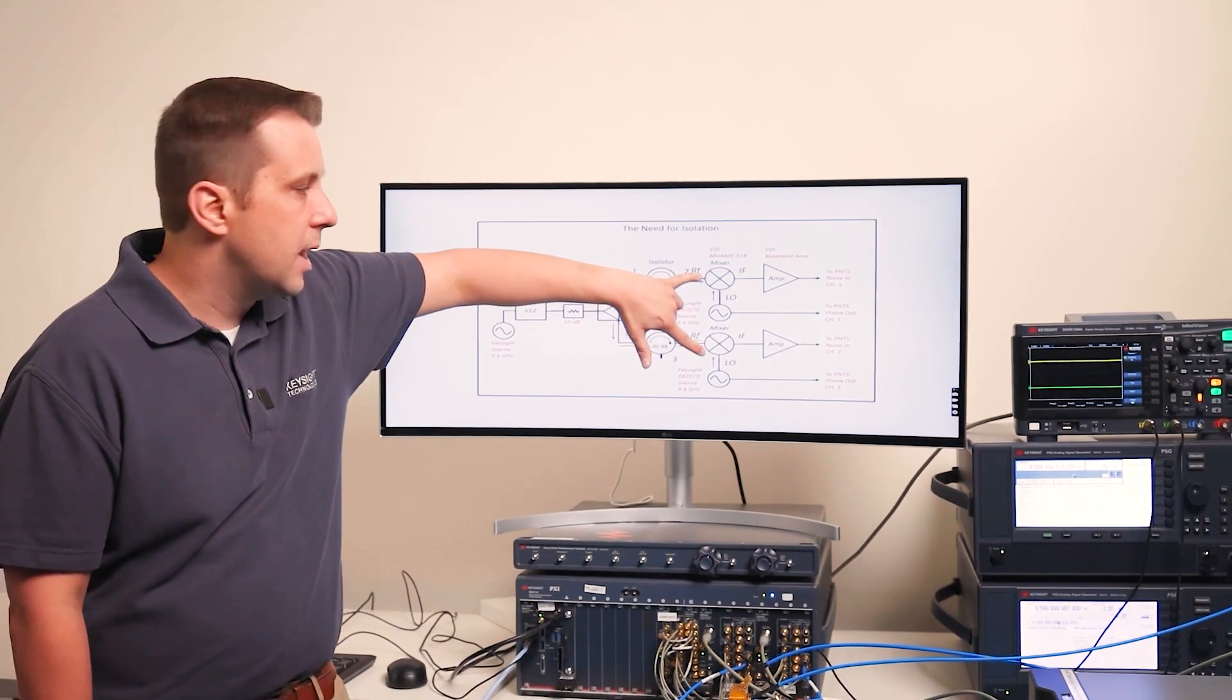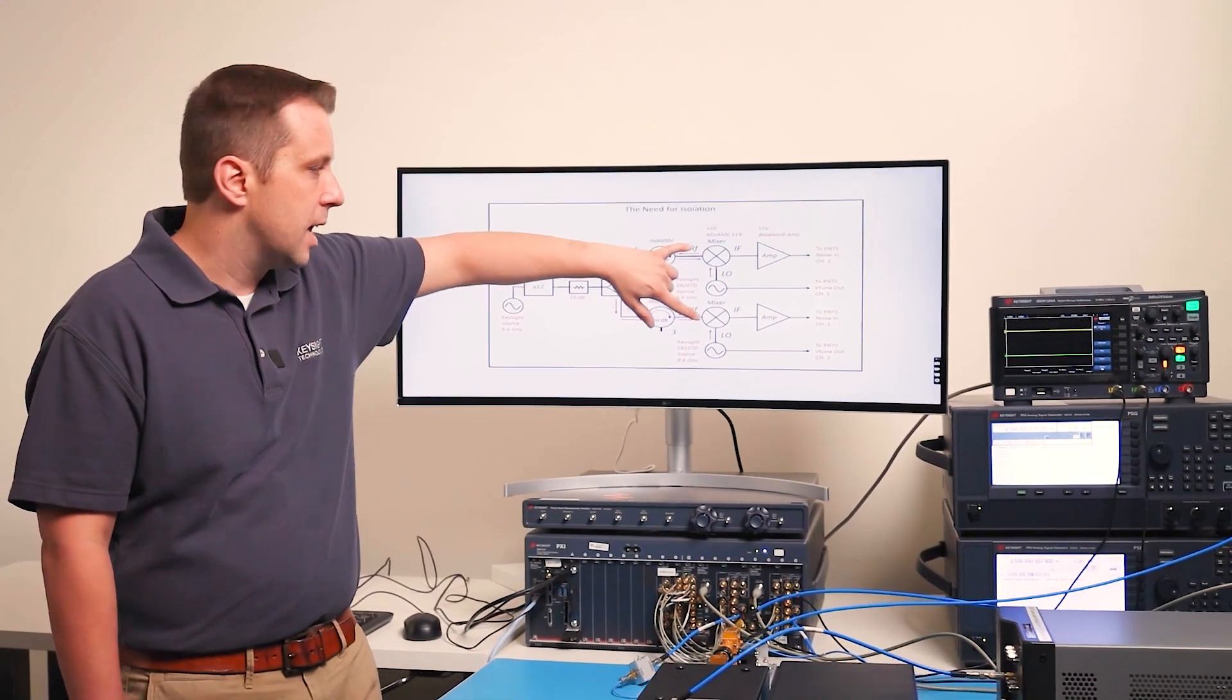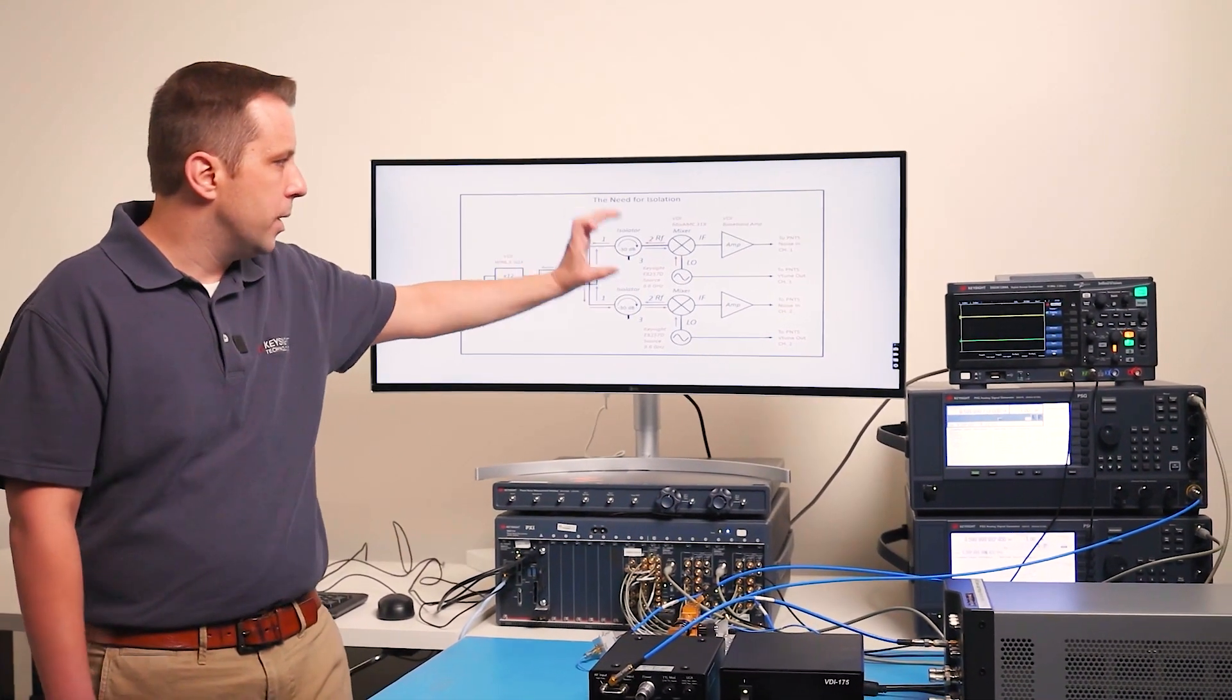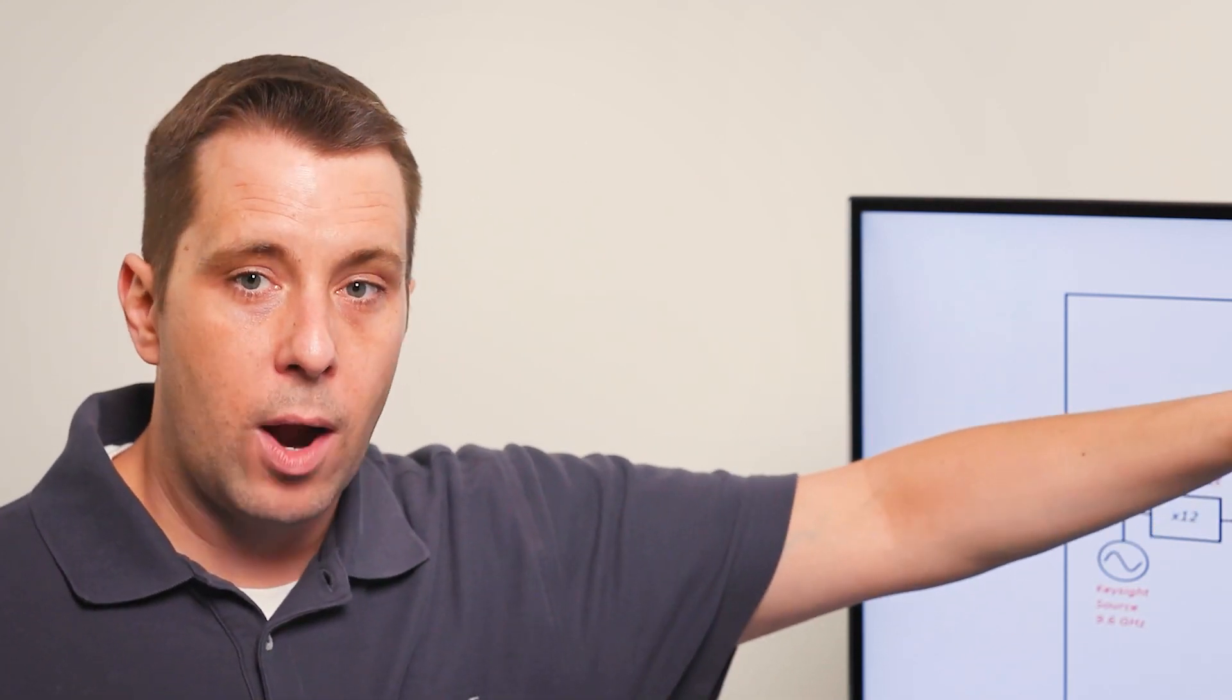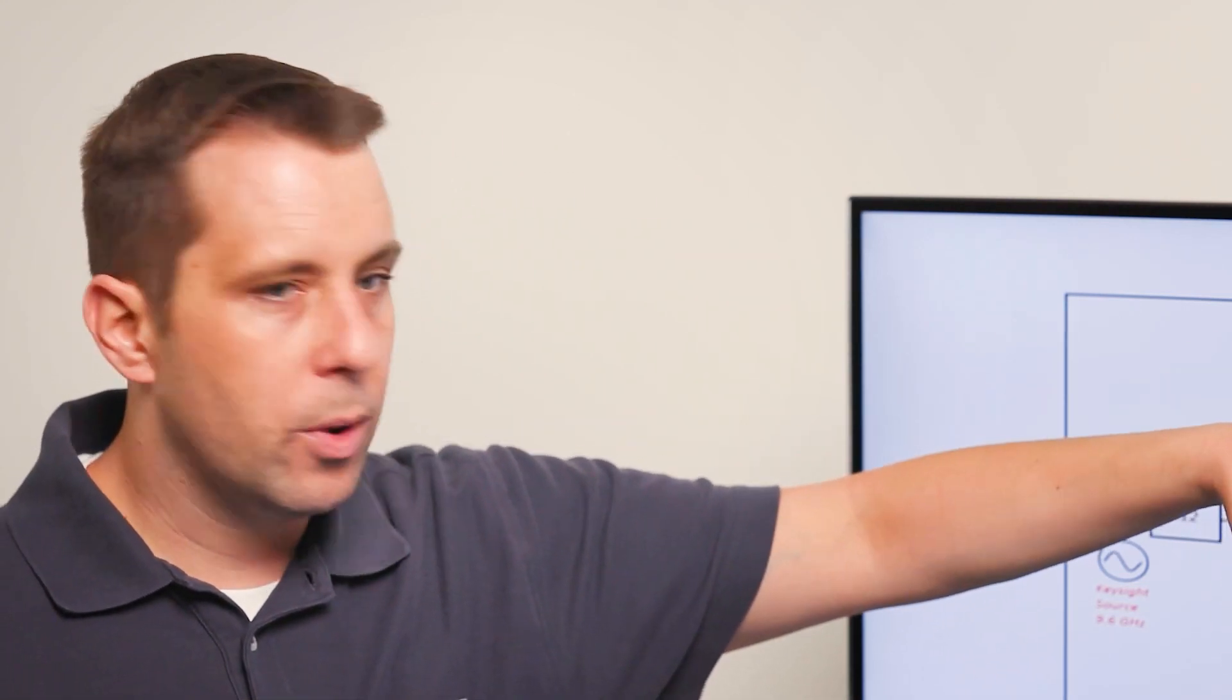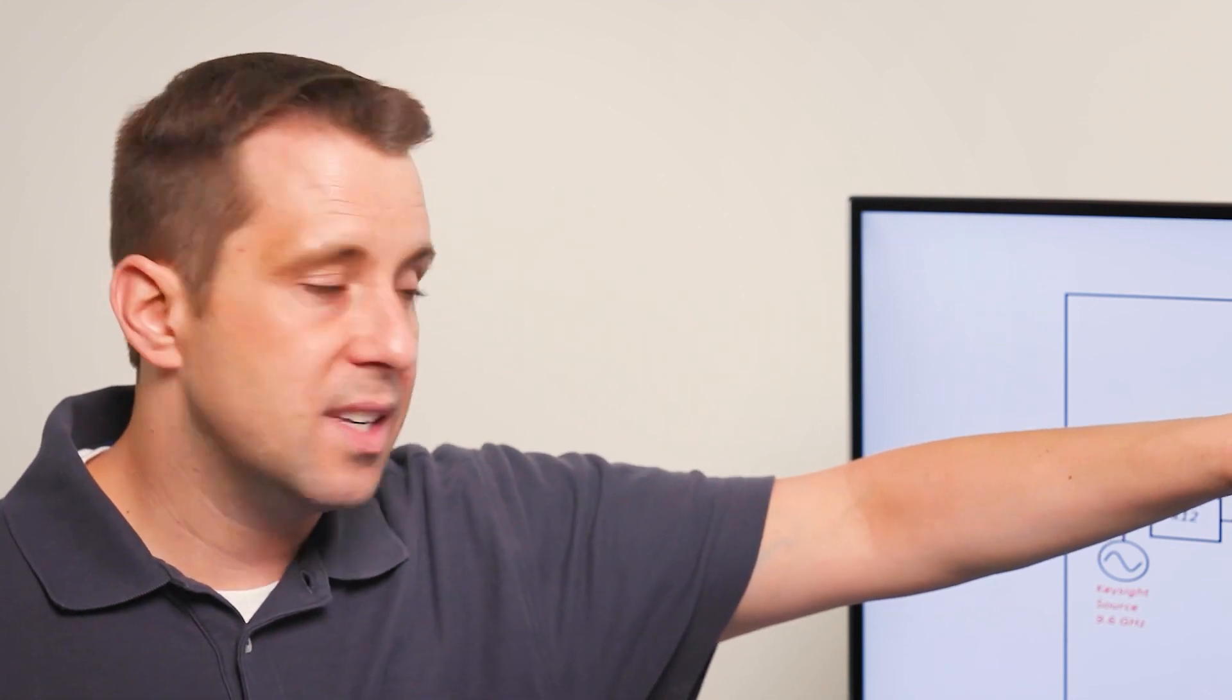These two VDI mixers are being used as phase detectors, which as I said are when you have the LO and the RF in quadrature and the carrier is suppressed. Which is nice because then we don't have to worry about overranging the ADCs in the system.